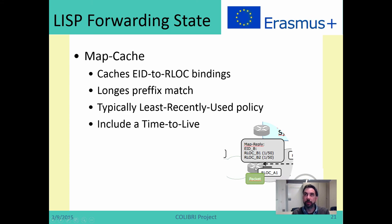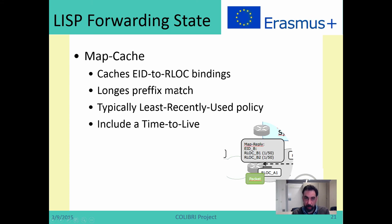The tunnel router does not request a mapping for each packet. Whenever it learns a mapping — for instance through a MapReply — it will store this mapping in a cache. So packets addressed towards the same EID don't need to send a MapRequest — the information is already cached. This MapCache is equivalent to the RIB in BGP: it is the information LISP routers use to forward packets. It has EID-to-RLOC bindings, operates based on longest prefix match, and typically implements a Least Recently Used (LRU) policy. Each mapping also includes a Time-to-Live, so the tunnel router must expire the mapping when the TTL expires and send a new MapRequest to refresh it.